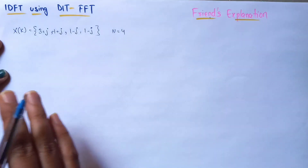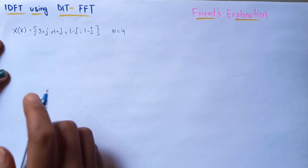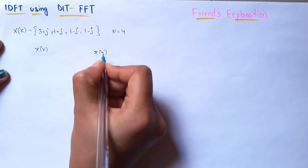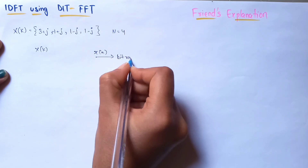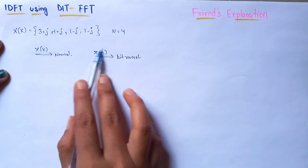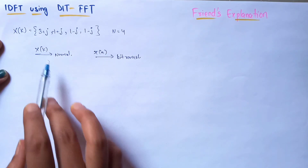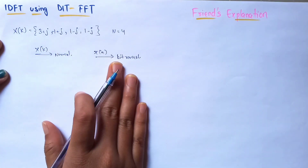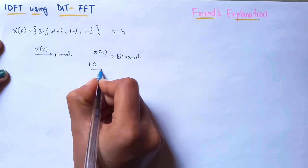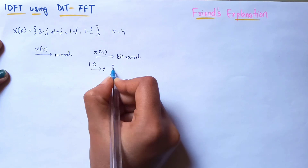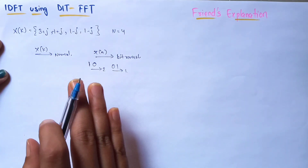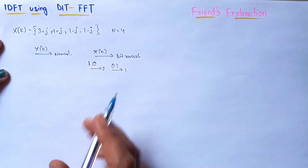As we saw in the previous video, the index values of the time domain samples are bit reversal. That means the input will be X(k) and the output will be x(n), and these outputs will be bit reversal while the inputs will be in normal order. I'll show you what bit reversal means — you take the binary representation and reverse the bits to get the new index.